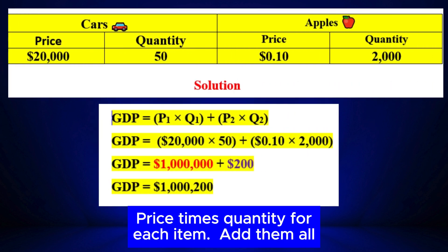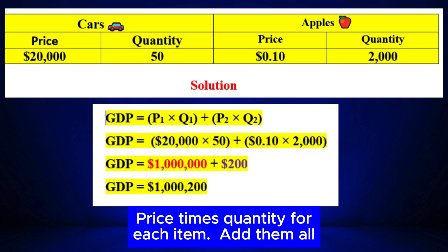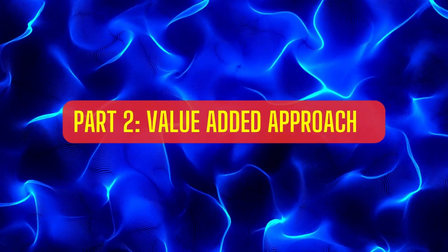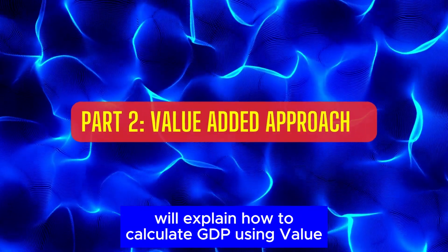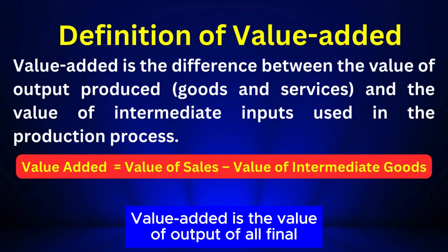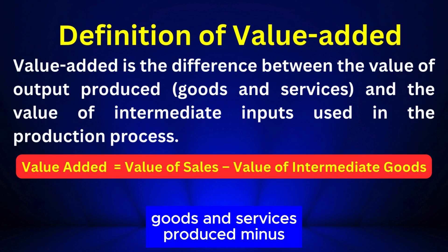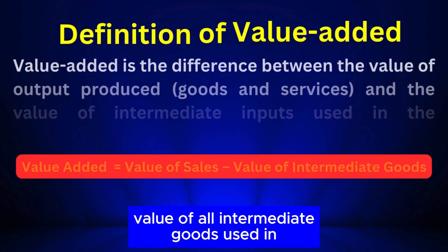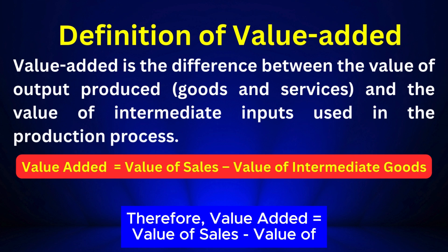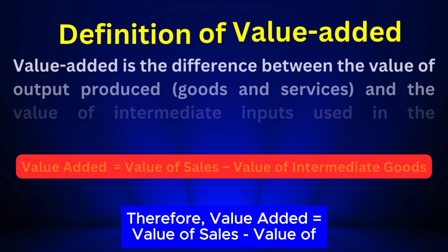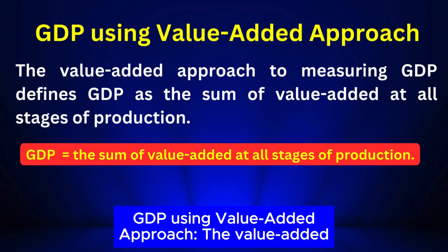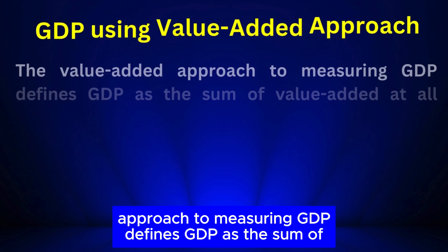Part 2: Value Added Approach. In this part we will explain how to calculate GDP using the value added approach. Value added is the value of output of all final goods and services produced minus the value of all intermediate goods used in the production process. Therefore: Value Added = Value of Sales minus Value of Intermediate Goods.